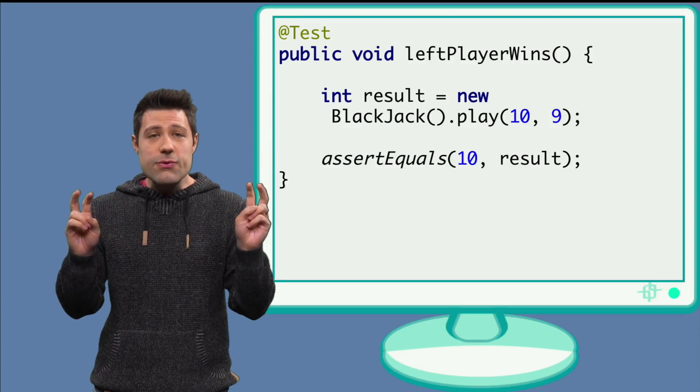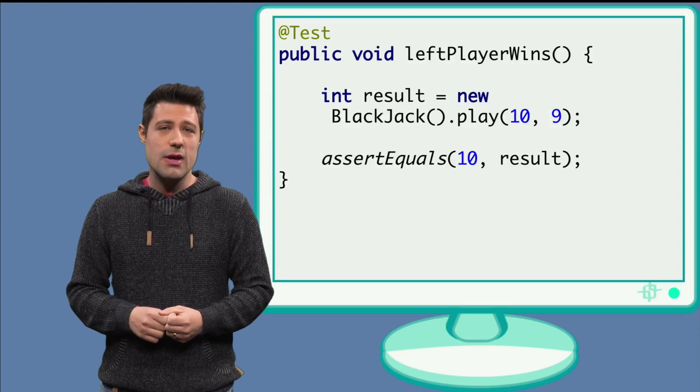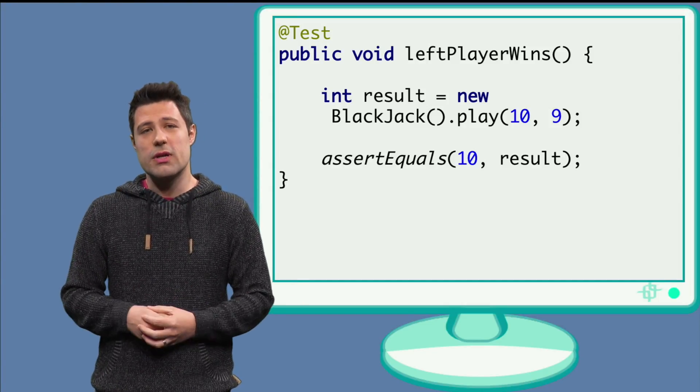In code, we can write a left player wins test. If the left player has 10 points and the right player has 9 points, then the left player wins, and the program needs to return 10.